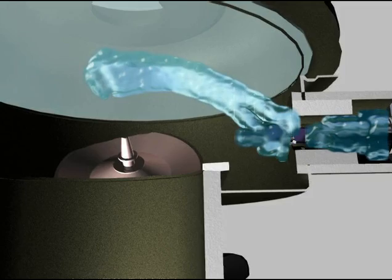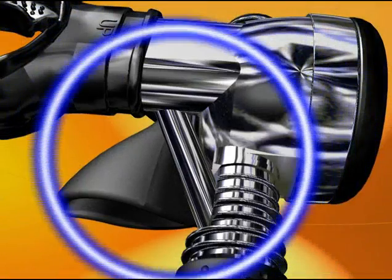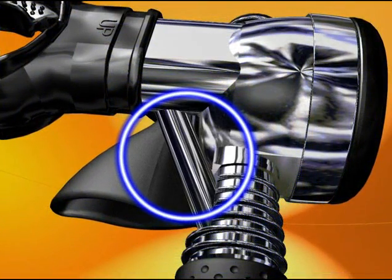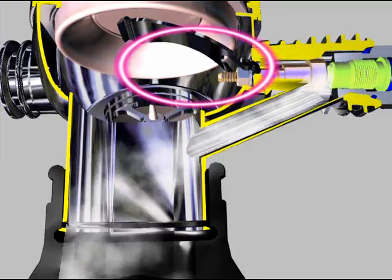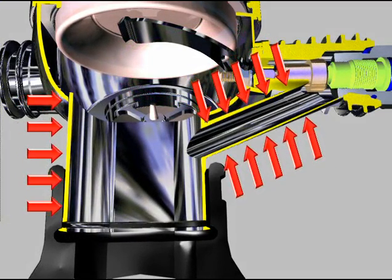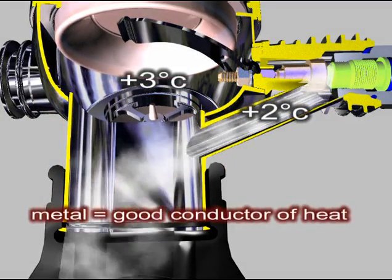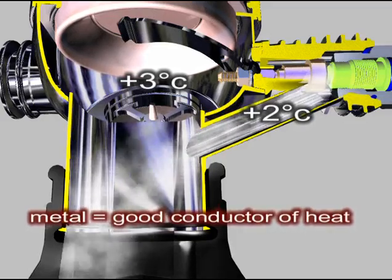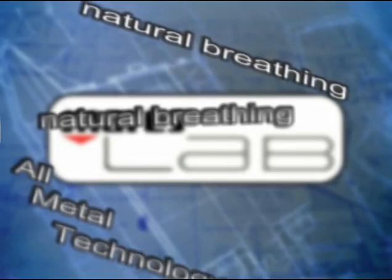These ice crystals noticeably alter the operation of the second stage. With the VAD system found in Mares second stages, the expansion of air takes place inside the bypass and the mouthpiece, and does not directly involve the mechanical components. What's more, the good thermal conductivity makes it possible to keep the temperature inside the second stage very close to ambient temperature — that is, many degrees above the temperature required for the formation of ice.